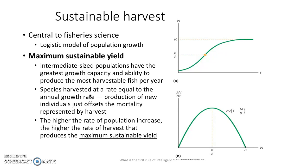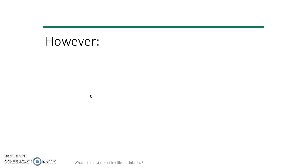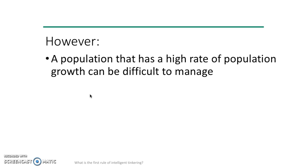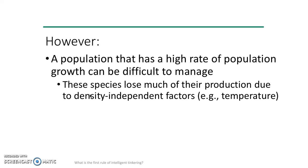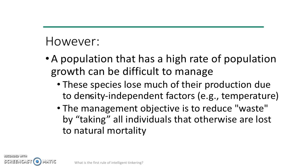But once again, maximum sustainable yield ignores the ecology and the biology of these systems. A population that has a high rate of population growth can be difficult to manage. Species lose much of their production not due to harvest, but due to other factors — density-independent factors. Management objectives aim to reduce that waste by taking all the individuals that otherwise would have been lost to natural mortality.